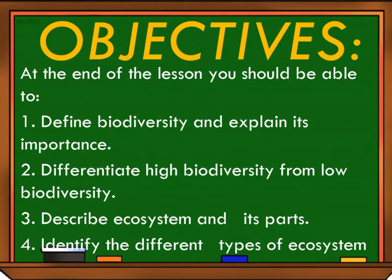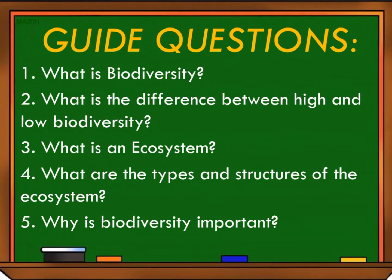For today's objectives, at the end of the lesson, you should be able to: number one, define biodiversity and explain its importance; second, differentiate high biodiversity from low biodiversity; third, describe ecosystem and its parts; and number four, identify the different types of ecosystem. Our guide questions are: what is biodiversity? What is the difference between high and low biodiversity? What is an ecosystem? What are the types and structure of the ecosystem? And why is biodiversity important?